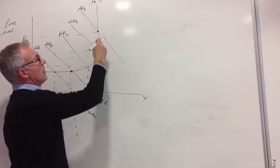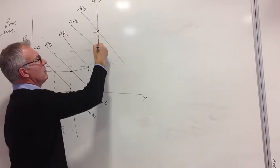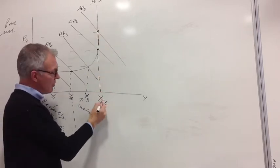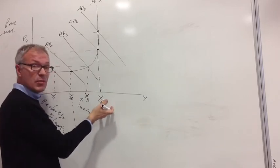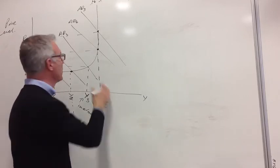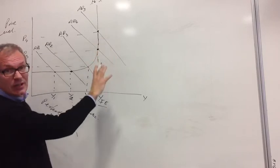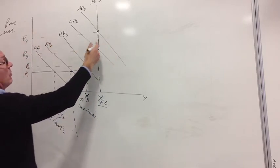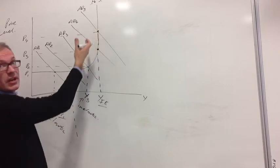Because aggregate supply has become perfectly vertical. It's become perfectly inelastic because we're at full employment, we can't increase output anymore, according to the Keynesian model. So we simply end up with more inflation, once aggregate demand goes to the right of AD4.